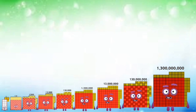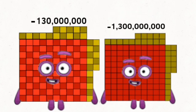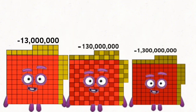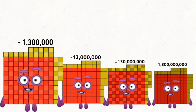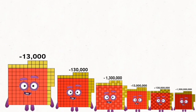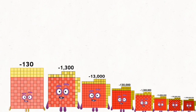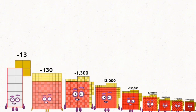One hundred thirty million. Negative one billion three hundred million. Negative one hundred thirty million. Negative thirteen million. Negative one million three hundred thousand. Negative one hundred thirty thousand. Negative one thousand three hundred. Negative one hundred thirty. Negative thirteen.